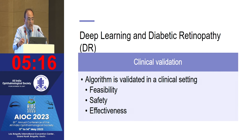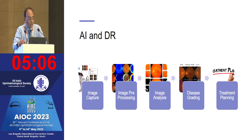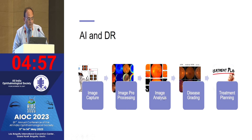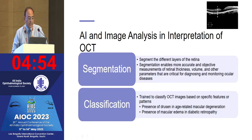After training and testing, there is a step called clinical validation, where the algorithm is validated in a clinical setting for feasibility, safety, and effectiveness. The overall workflow is: image capture, preprocessing, analysis by the machine, disease grading, and then treatment planning.